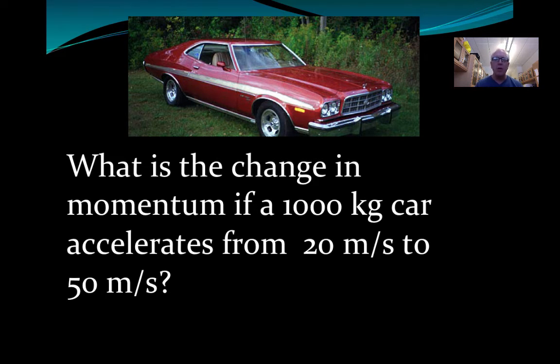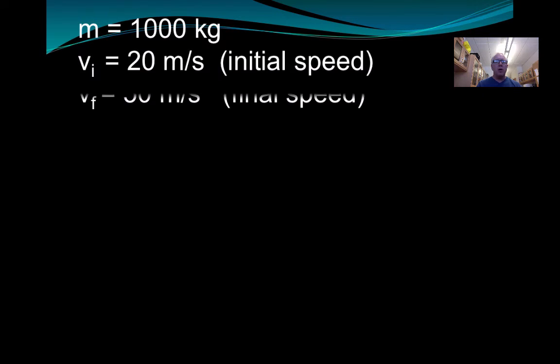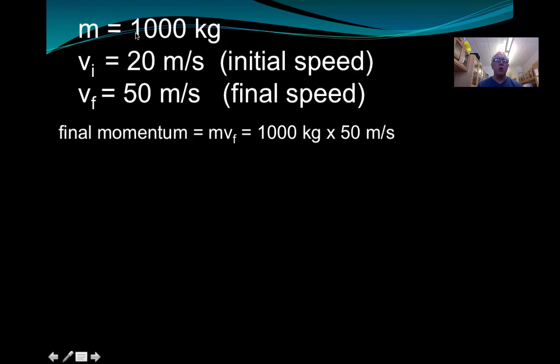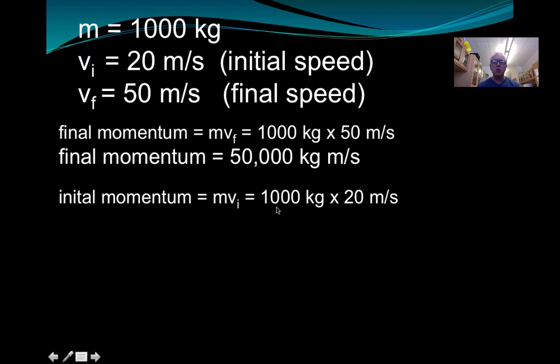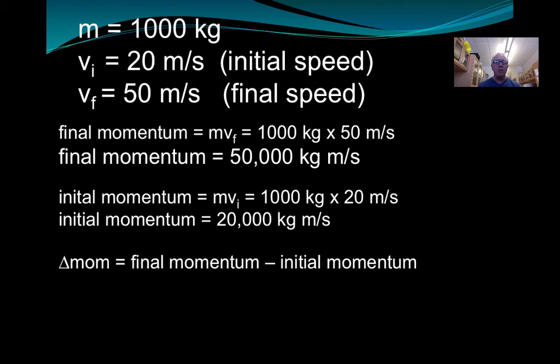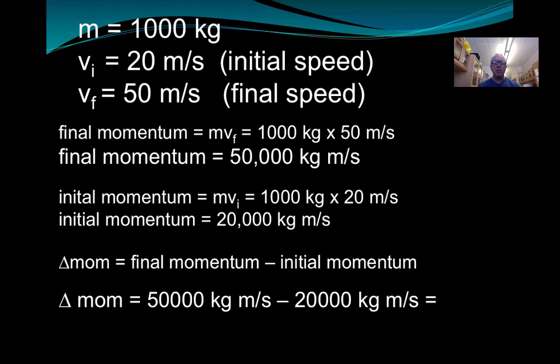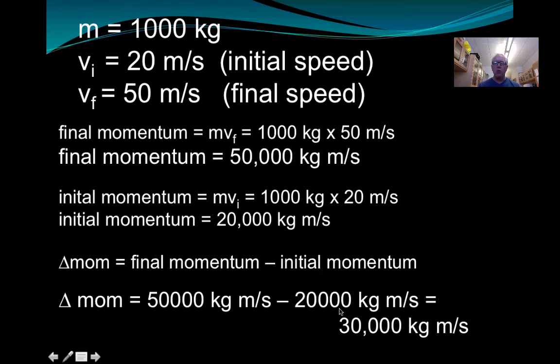Okay, well, welcome back. I came up with 30,000 kilogram meters per second. Is that what you got? Let me show you the step-by-step. We're going to identify the information as we always do. So here is our mass, here is our initial speed, here is our final speed. The final momentum is the mass multiplied by the final speed, so 50,000 kilogram meters per second. The initial momentum is the mass multiplied by the initial speed, and that's 20,000. Our change in anything is our final value minus our initial value. So in this case, 50,000 minus 20,000, or 30,000 kilogram meters per second. That's the change in momentum.